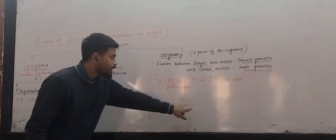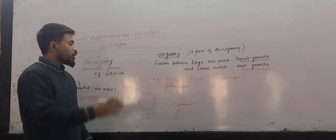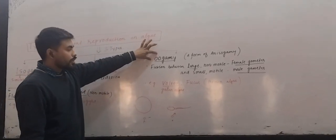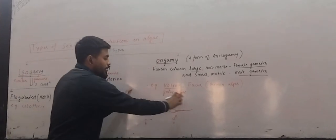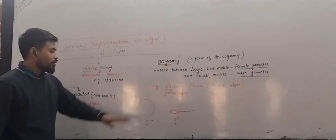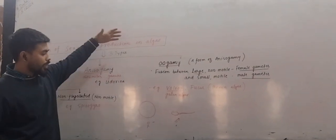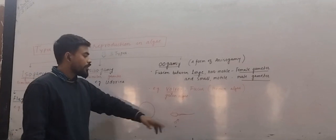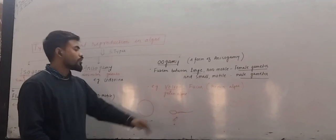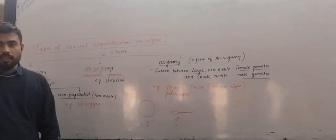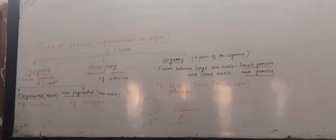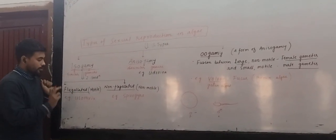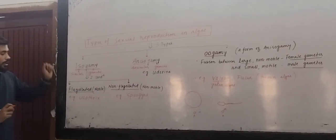The sperm has a tail, so it shows movement. In oogamy, the male gamete is small in size and shows motility. In exams, you will find a question asking which of the following organisms shows flagellated isogamous type of sexual reproduction.